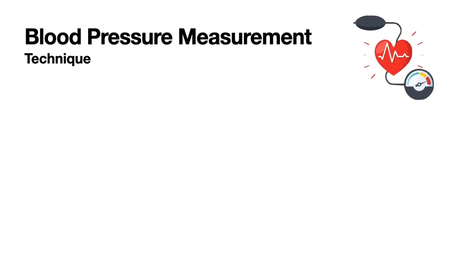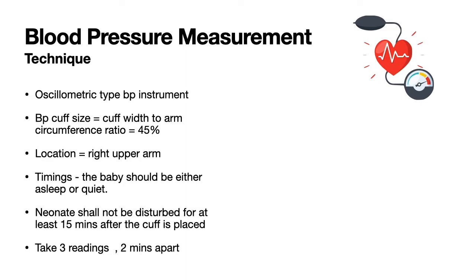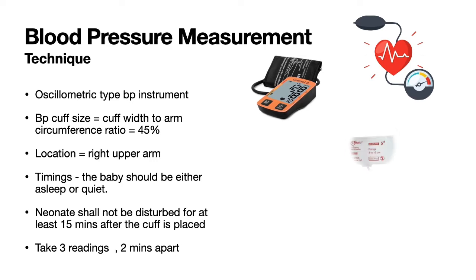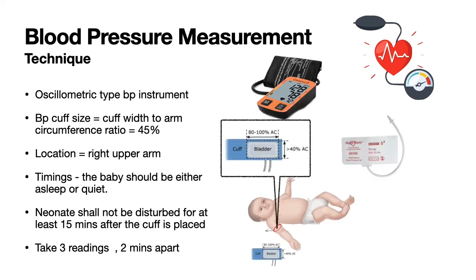Since blood pressure is one of the most important factors in determining shock, it is very important to know the correct measurement techniques. Non-invasive BP measurement should be done using an oscillometric type of BP instrument. The BP cuff size should be around 45% of the arm circumference. The ideal time to measure BP is when the baby is sleeping or quiet; once the cuff is fastened, the neonate should not be disturbed for at least 15 minutes.